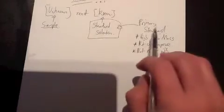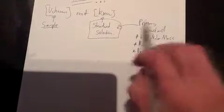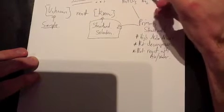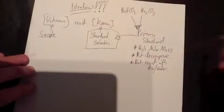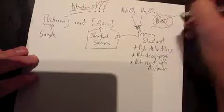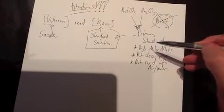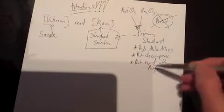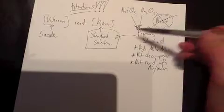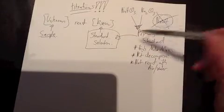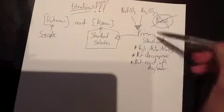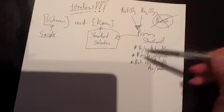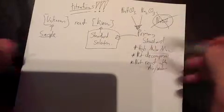Standard solutions must be made from primary standards because of these different features. Some examples of primary standards are sodium hydrogen carbonate or sodium carbonate. What's not a primary standard? Sodium hydroxide. You're not allowed to use sodium hydroxide as a primary standard for two reasons: the molar mass isn't as high as others, and also it reacts with carbon dioxide in the air. So after a while, if you make a standard solution with sodium hydroxide, it will change and it won't be known anymore. That's what a primary standard is - it's used to make a standard solution, it must not decompose and must have a high molar mass.